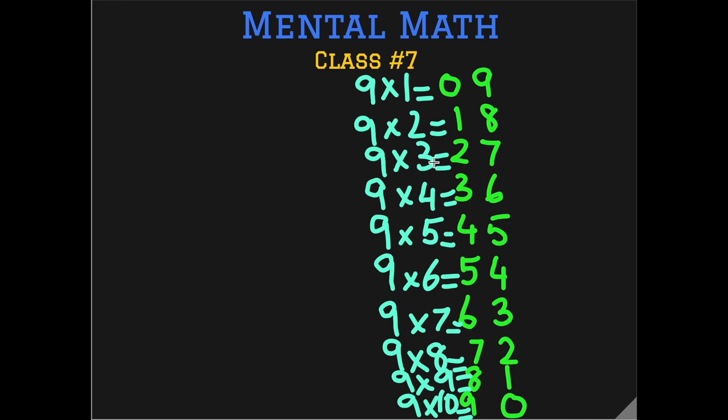All of these answers when you add up the digits the sum is 9. 9 times 2 is 18, 1 plus 8 is 9, 9 times 4 is 36 and 3 plus 6 is 9.